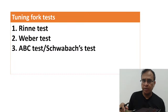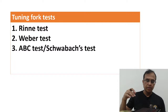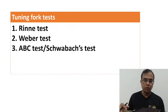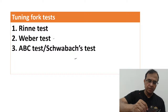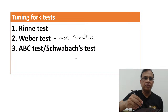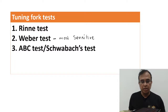The tuning fork test is the most important test asked in the exam. Last year in the MCI screening test, there was a question on tuning fork. These are the three most important tests: Rinne's test, Weber's test, and Schwabach test. Weber's test is the most sensitive tuning fork test, meaning it can pick up the minimum hearing loss. The minimum hearing loss can be picked up by Weber's test.